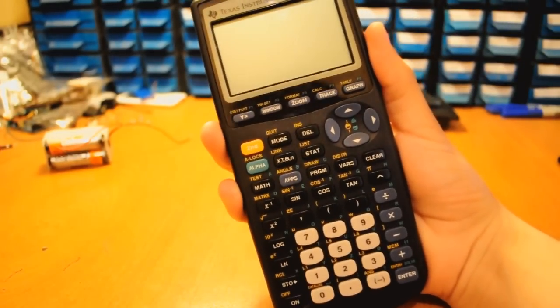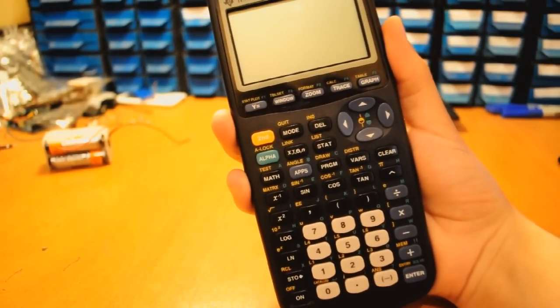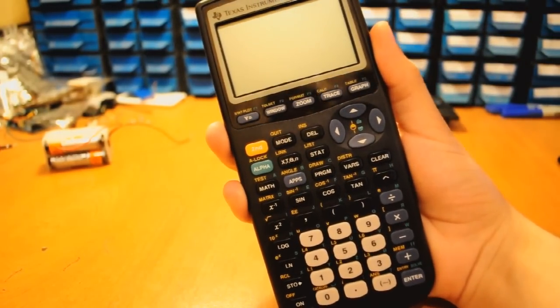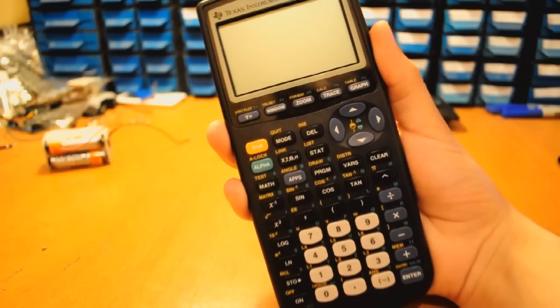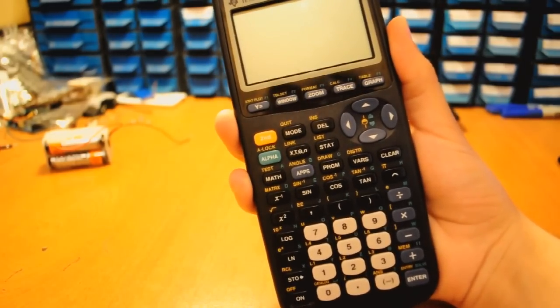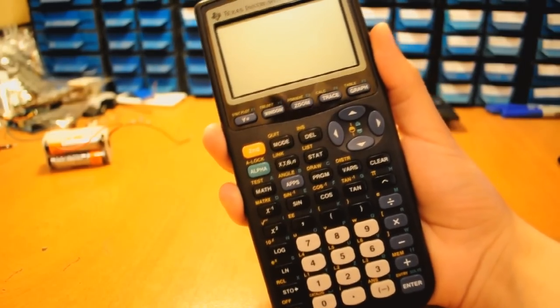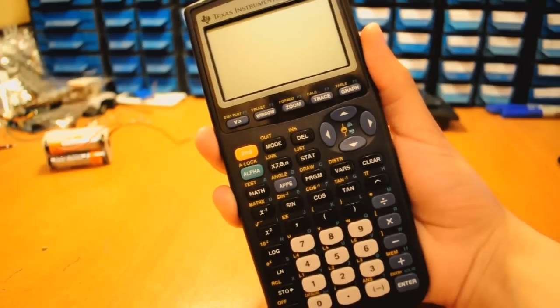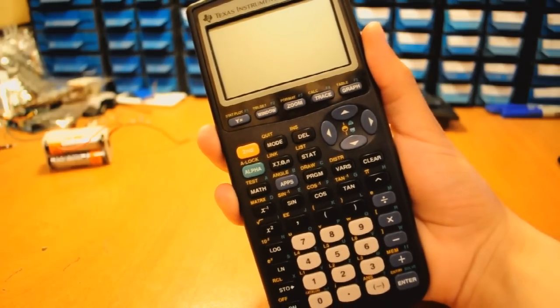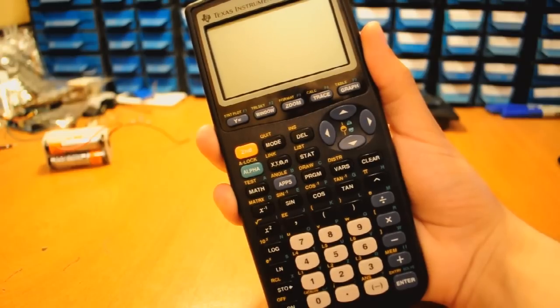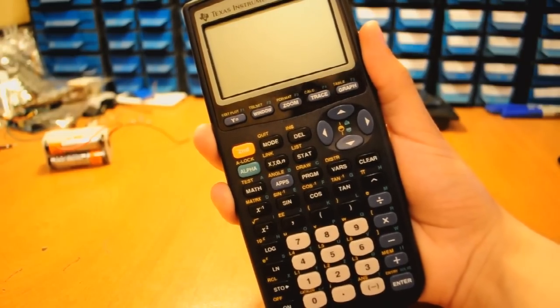This is a TI-83 Plus graphing calculator I got recently from a thrift store for about $5. When I got it, unfortunately, when I put the batteries in and tried to turn it on, it just displayed a single horizontal line on the LCD screen and most of the time it didn't do anything.